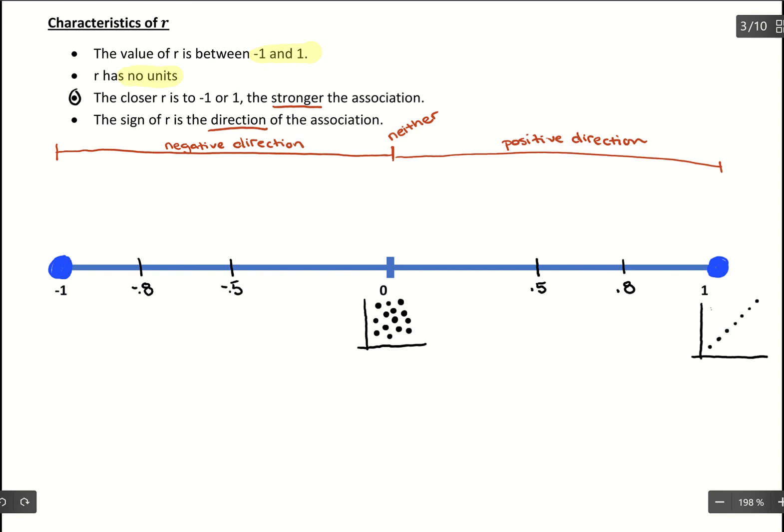At negative 1, it's the same idea. It's the strongest fit we could get, but with a negative direction, so it's just going to be decreasing.